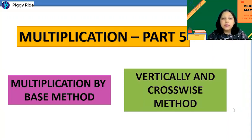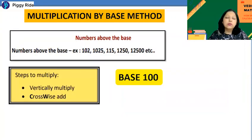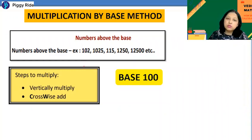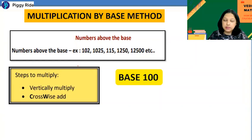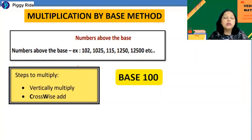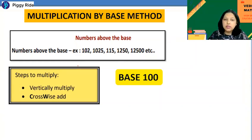Today we are going to discuss multiplication by the above base method. With the base method, we can take numbers below the base or above the base. Base means numbers like 10, 100, 1000, 10000, and more. If you are taking 100 as a base, numbers above 100 are called above the base, and numbers below 100 like 98 or 99 are called below the base.